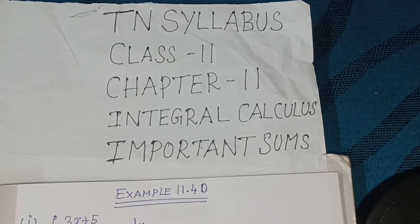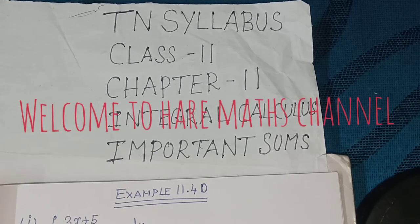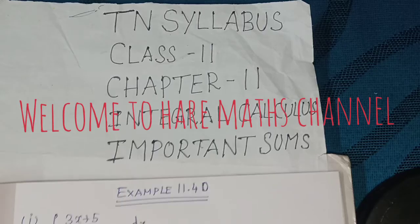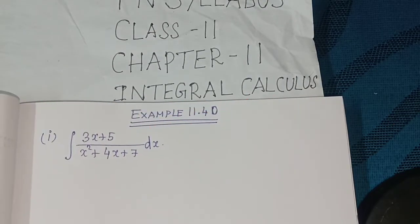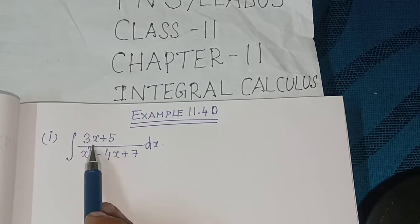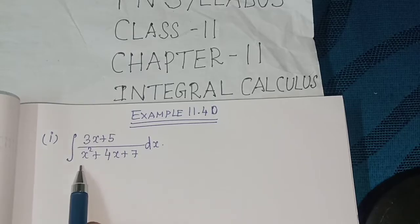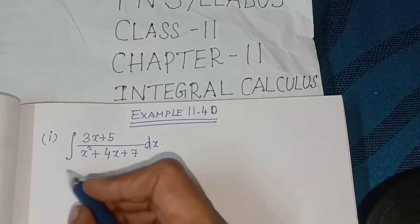Hello students, welcome to Harimax channel. T in syllabus class 11, chapter 11, integral calculus important sums. Example 11.40, the first subdivision: integral of (3x + 5) divided by (x² + 4x + 7) dx.